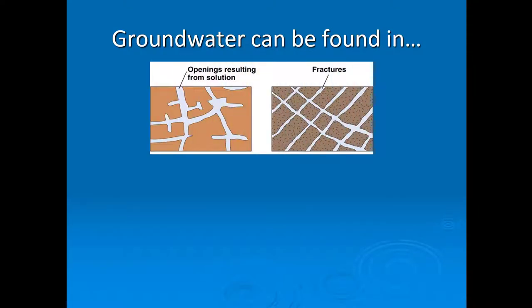You can find groundwater in a whole bunch of different places — in areas where there's been dissolution of the bedrock like caves, and also in igneous and metamorphic rock layers where the bedrock, although crystalline, can be fractured. One of my jobs before I became an MCC faculty member was working in the water division of the U.S. Geological Survey in Raleigh, North Carolina. In Asheville, North Carolina, the fracture system is pretty much how groundwater gets transmitted in the Blue Ridge Mountains.